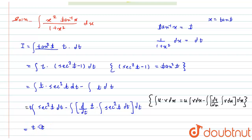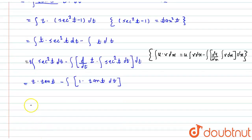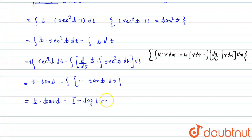The integral of sec squared t is tan t. So it becomes: t times tan t, minus the integral of 1 times tan t dt. The integral of tan t is minus log of mod of cos t. So this gives: t times tan t, minus log of mod of cos t, plus c.